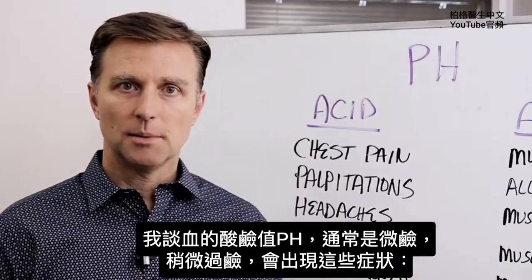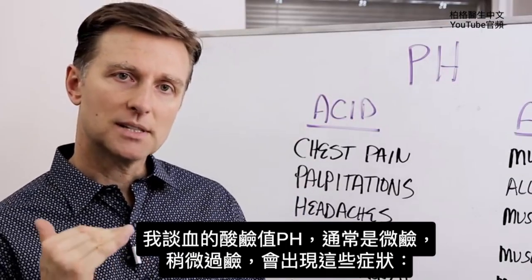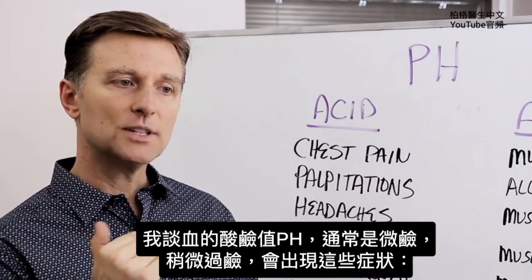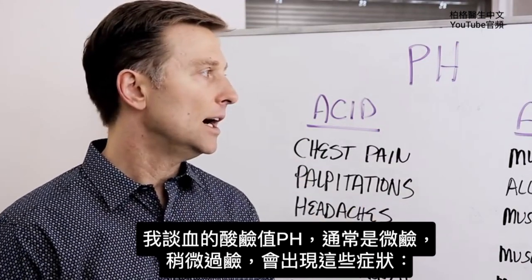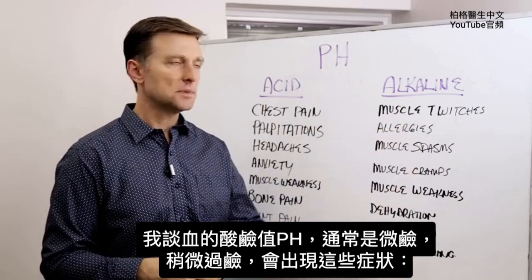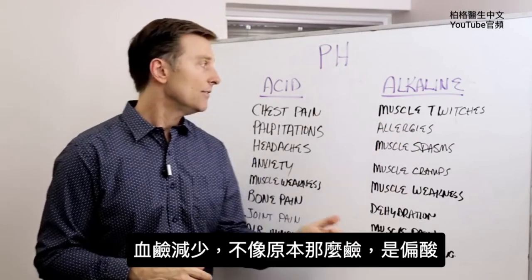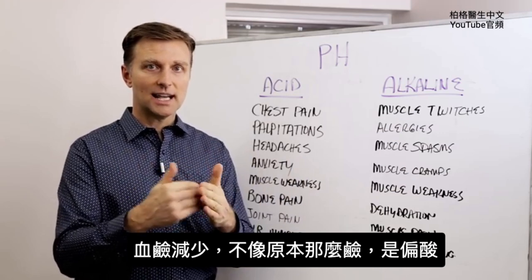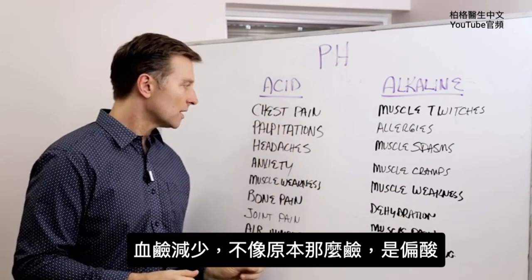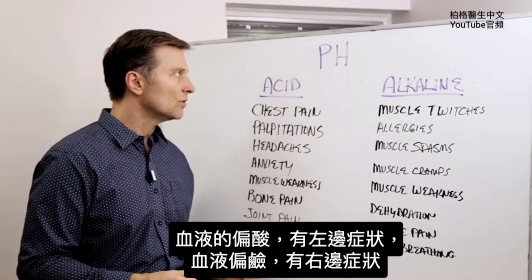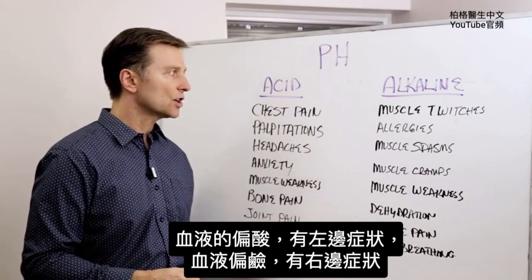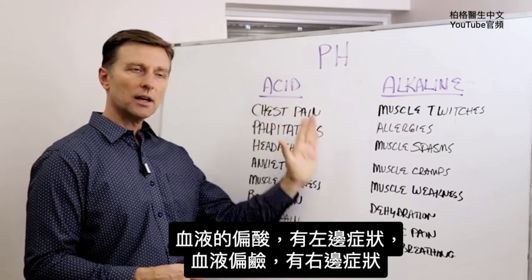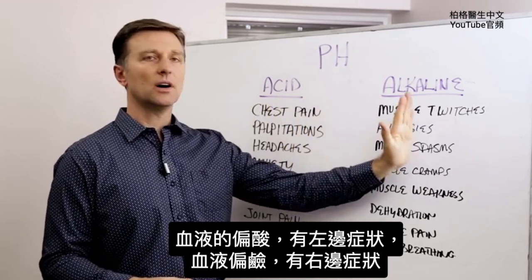What I'm talking about is the blood pH. The blood pH should normally be slightly alkaline. And if it's just a little bit too excessively alkaline, you can get all these symptoms right here. If it's a little less — it could still be on the alkaline side but just not as alkaline — or you can be more acidic. So those are basically all the symptoms that can occur if your blood pH is too far one way versus too far the other way.